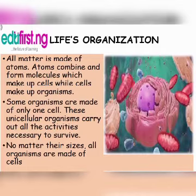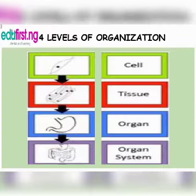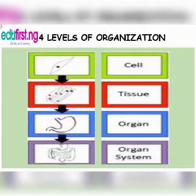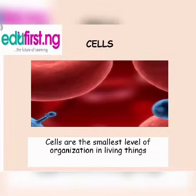We have four levels of organization: cell, tissue, organ, and system. We are going to take them one after the other to explain. Cells are the smallest level of organization in living things.